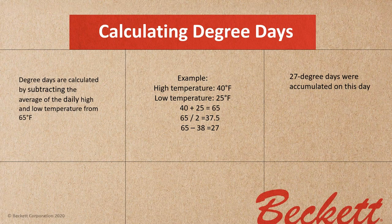Let's refresh our brains. Degree days are calculated by subtracting the average of the daily high and low temperature from 65 degrees Fahrenheit. In our example, the high temperature for the day is 40 degrees and the low is 25. We take 40 plus 25, which equals 65, divide by two to get 37.5, round up to 38, subtract from 65, and we end up with 27 degree days accumulated for that day.